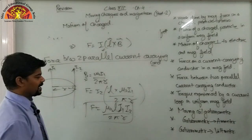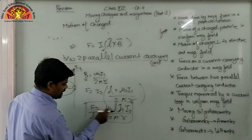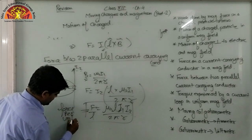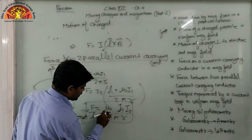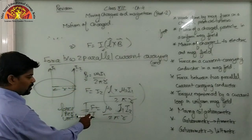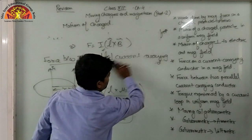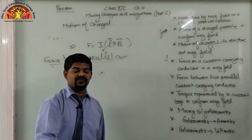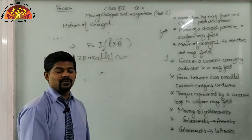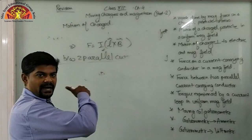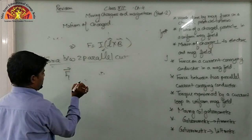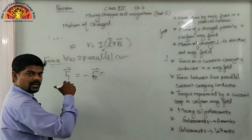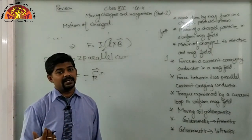For force per unit length, divide by L: F/L = μ₀I₁I₂/2πR. If we reverse the calculation — taking I₂ as the source and finding force on I₁ — the direction of force is toward I₁. So both forces are opposite in sign: if F₁ is positive, F₂ is negative, meaning both conductors play a role in attracting each other.